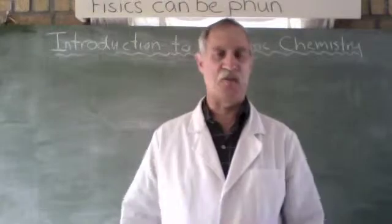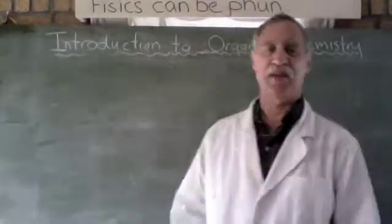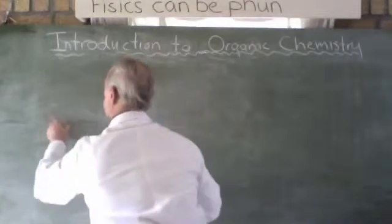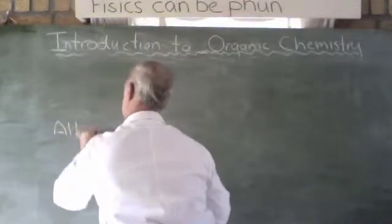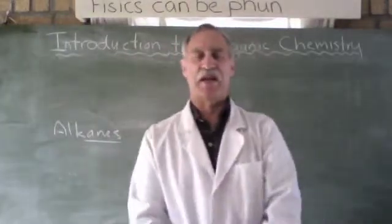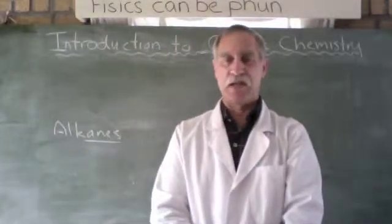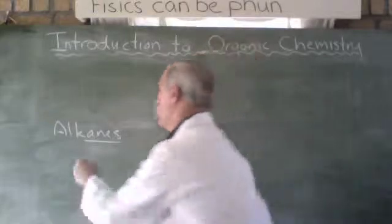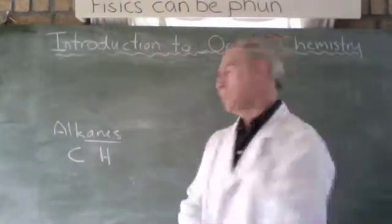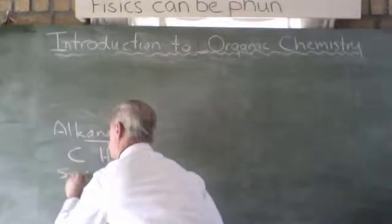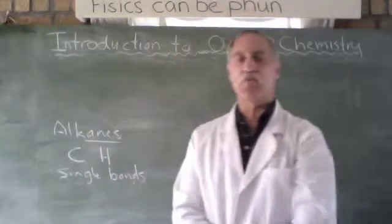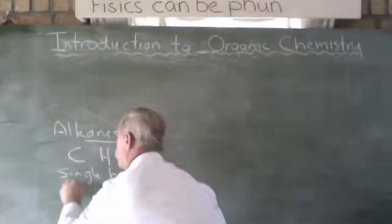So the very first group we're going to look at are the group called the alkanes. Their names all end in ane, and they basically consist only of carbon and hydrogen, single bonds. And the alkanes are mainly known as fuels.